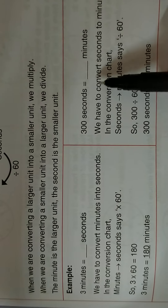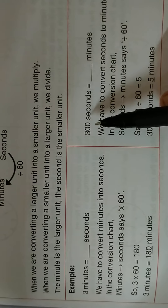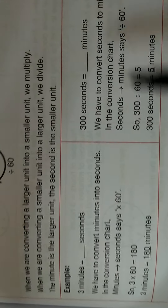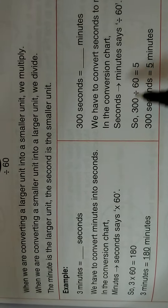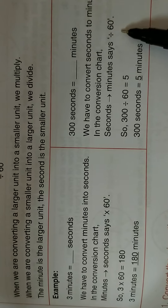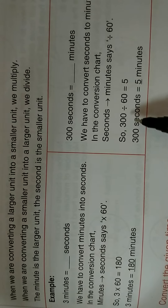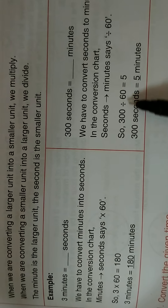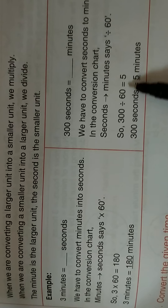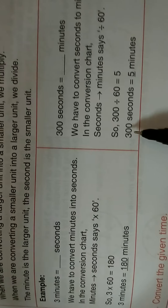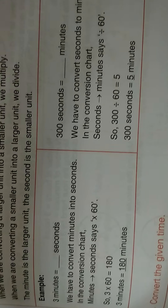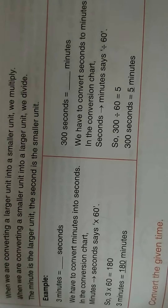In the conversion chart, minutes into seconds — we multiply by 60. So 3 into 60 is equal to 180. Therefore, 3 minutes is equal to 180 seconds. And to convert seconds into minutes, we divide by 60. For example, 300 seconds divided by 60 is equal to 5. So 300 seconds is equal to 5 minutes.